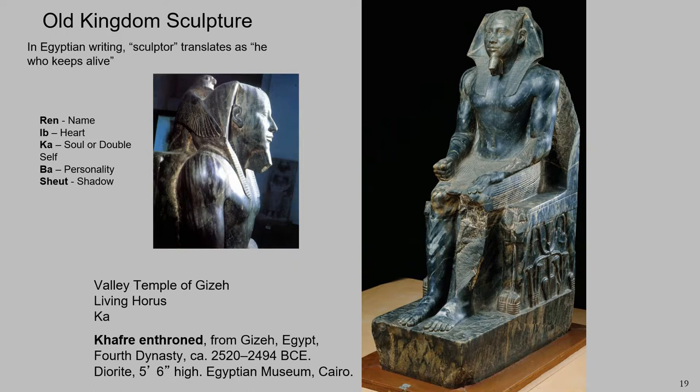What I want you to really pay attention to is how the pharaoh is depicted. He is flawless. He is perfect, he is young, he is eternal. Khafre, when this was created, was an old man — he certainly wasn't youthful and strong, but here he is shown as muscular. It was important to show the pharaoh as perfect because, first of all, he's godlike, but also this is his body for eternity.